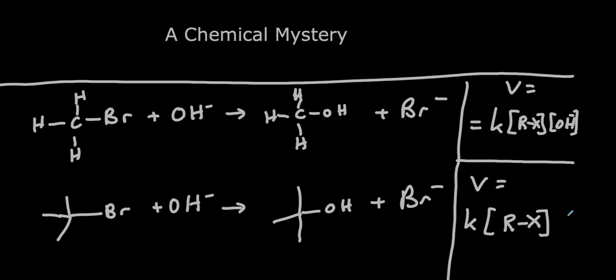So why are these different? The reason they're different is their mechanism is different. I want to show you each of these mechanisms one after the other, to give you a flavor of how to explore a mechanism and how to get the rate equation from the mechanism.